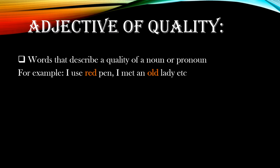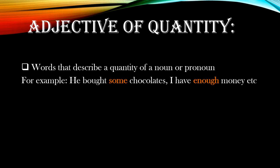Moving on — adjective of quality. These are the words that describe a quality of a noun or pronoun. Note the word 'quality,' which includes characteristics or features of a noun. For instance, 'I use a red pen' — red is used as an adjective of quality to describe the pen. Another example: 'I met an old lady' — old is an adjective of quality describing lady. We can also say 'I met a beautiful lady' or 'I met a strong lady.' Both strong and beautiful are adjectives of quality.